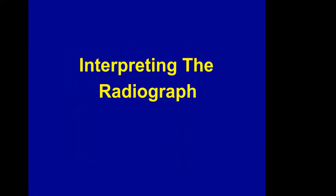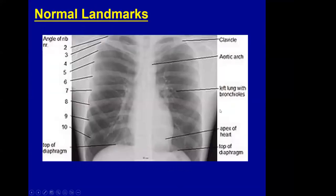Now let's look at how to interpret the radiograph. Looking at the landmarks, we can see the angle, the ribs, the clavicle, the aortic arch, the left lung with bronchioles, the apex of the heart, and the tops of the hemidiaphragms.